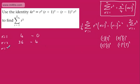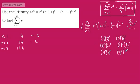Taking r equals 3: the first part gives 3 squared times 4 squared, which is 9 times 16 equals 144. Substituting into the second part gives (3−1)² times 3², which is 2 squared times 3 squared — and those two are equal, as we should be recognising.